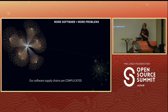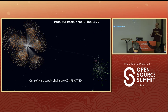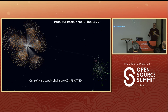Just as more cats equals more problems, more software equals more problems. A lot of folks have been talking about how the number of packages a single piece of software depends on continues to increase year after year, leading to a situation where our software supply chains are incredibly complicated.